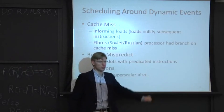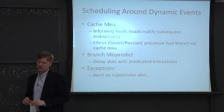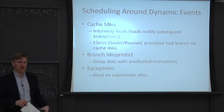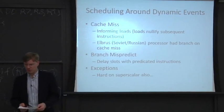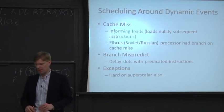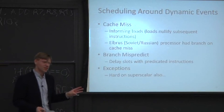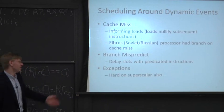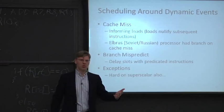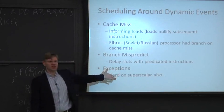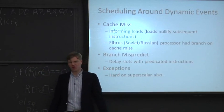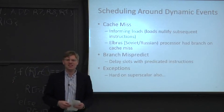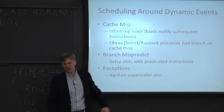This is actually done in a research processor built at MIT called the M machine, out of Bill Dally's group — he's now at Stanford. They had three delay slots, were three wide, and could predicate instructions in the delay slots. Finally, exceptions: if you take an exception and want a different code schedule, these are impossible for the compiler to predict. But this is hard on a superscalar too — when an exception happens, they usually flush the pipe anyway. It doesn't happen often enough to hurt performance much.